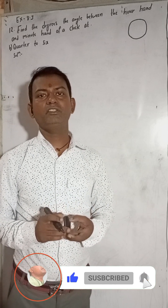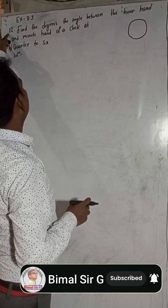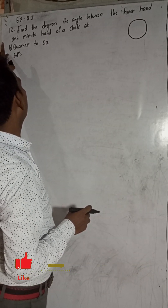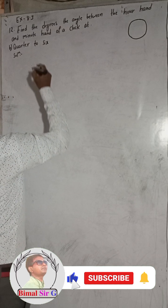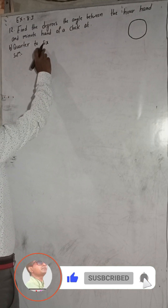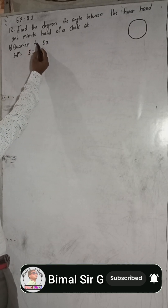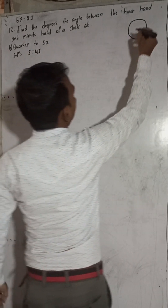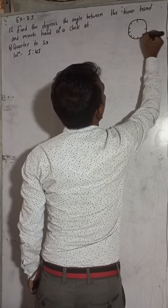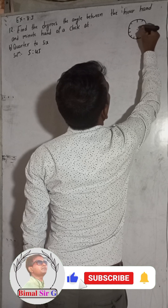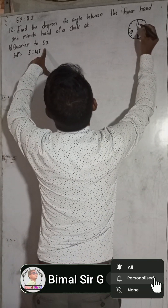Hi everybody, welcome back to Bimar Sarji YouTube channel. I am going to solve exercise 8.3, question 12, number b. I have already solved part a. This is quarter to six. Quarter to six means there are 50 minutes remaining at six o'clock, so this will be at 5:45. To draw the clock: 12, 6, 3, 9 — quarter to six means 45 minutes.